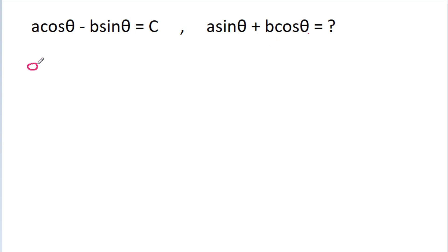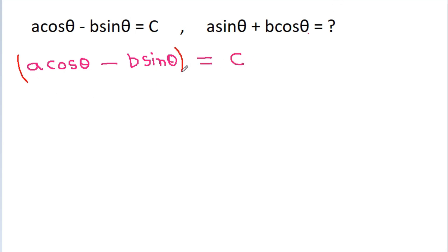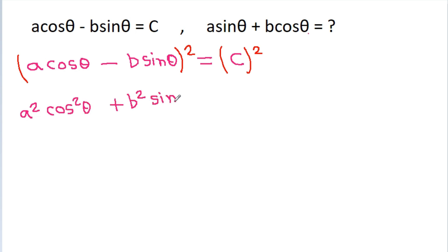We have given that a cos theta minus b sin theta is equal to c. If we square both sides, then we get a squared cos squared theta plus b squared sin squared theta minus 2ab sin theta cos theta is equal to c squared.